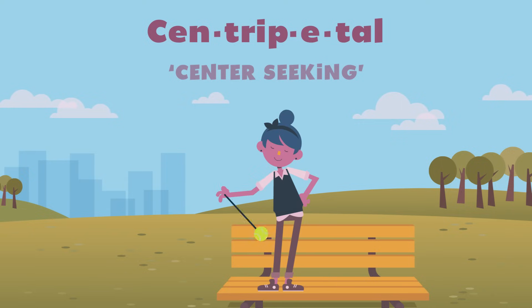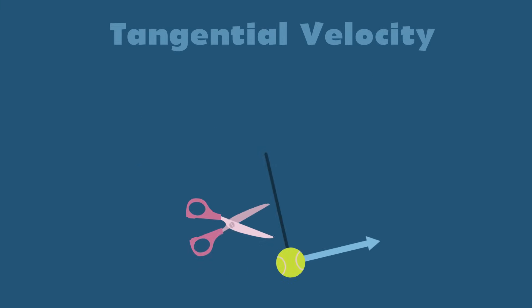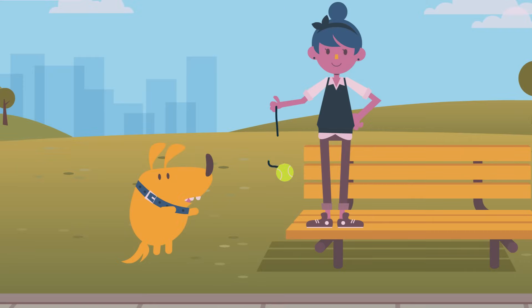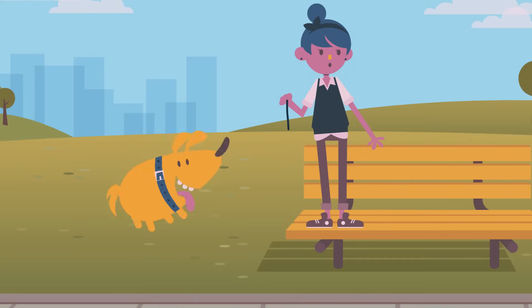It's named centripetal because the centripetal force always points to the center of the circle. The ball has a tangential velocity, so if you suddenly cut the string, it would fly off in whatever the tangential direction was at the moment you made the cut.